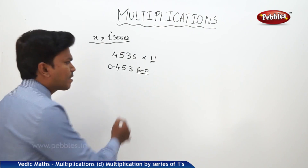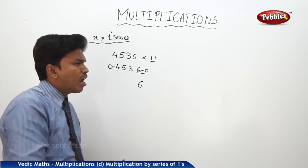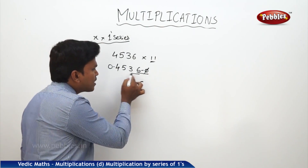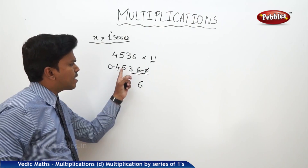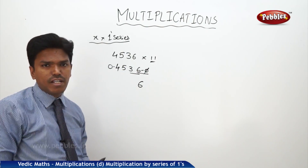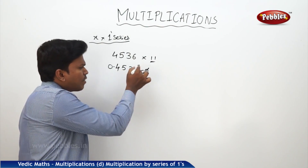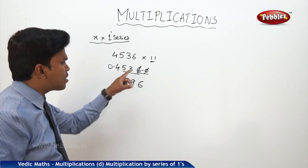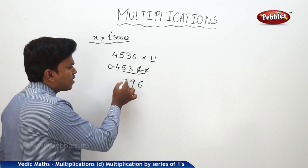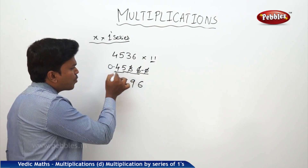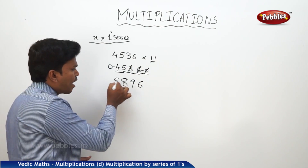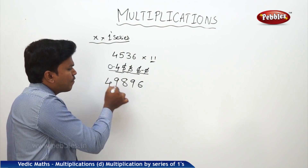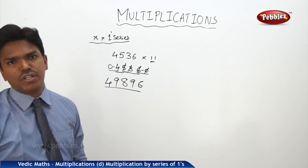First: 0 plus 6 = 6. Now leave the rightmost digit and add next 2 digits: 6 plus 3 = 9. Leave the rightmost and add next 2 digits: 3 plus 5 = 8. Then 4 plus 5 = 9. And finally 4 plus 0 = 4. So this will be your answer.